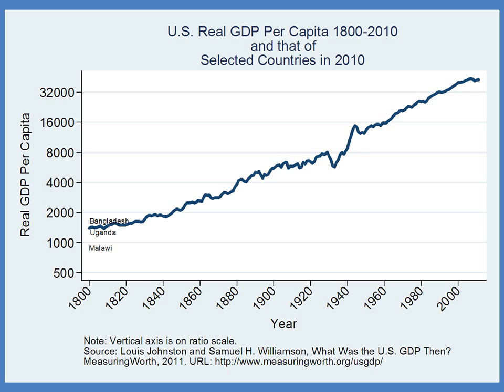These comparisons are not perfect because we're making them over very long time periods. Nevertheless, this gives us an intuitive sense of how people in other countries are living. Nigeria is about as rich as the typical person in the United States was in 1850. India's per capita income is about that of the United States in 1870. China has a GDP per capita about the same as the United States did in 1920. Peru's GDP per capita is about U.S. levels of 1940. Mexico and Argentina today are about as rich as the United States was in 1960. Italy is about where the United States was in 1980 — I remember 1980, it was pretty good, so life in Italy is not so bad at all.